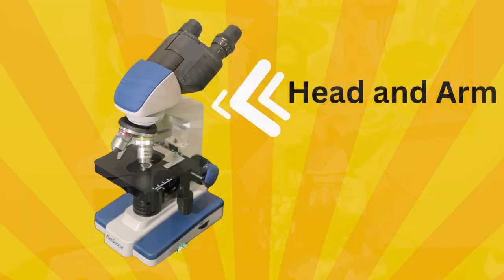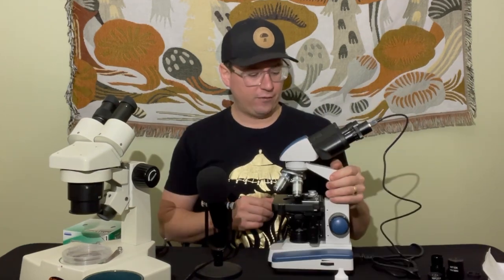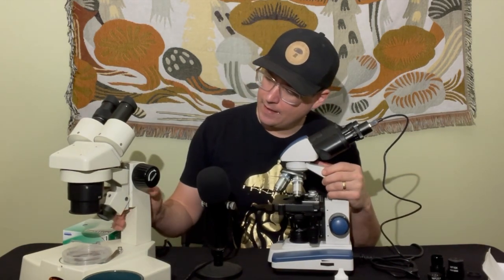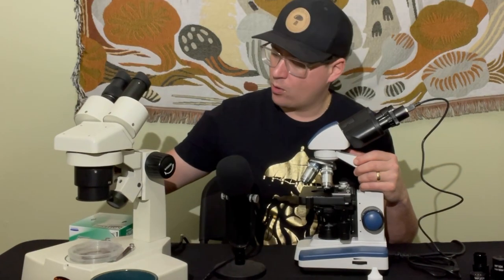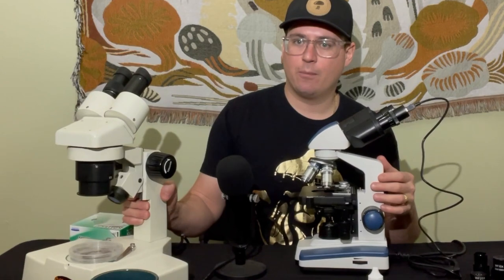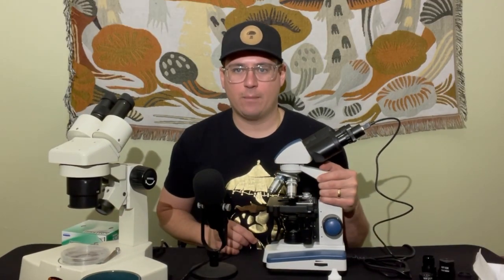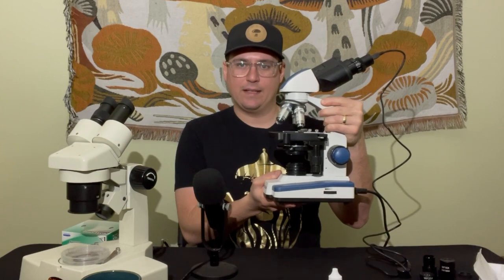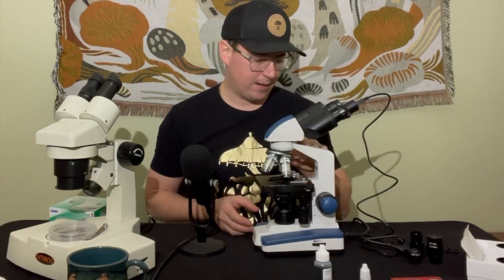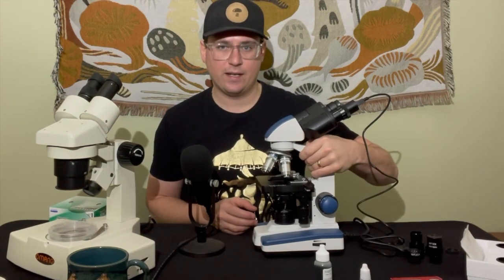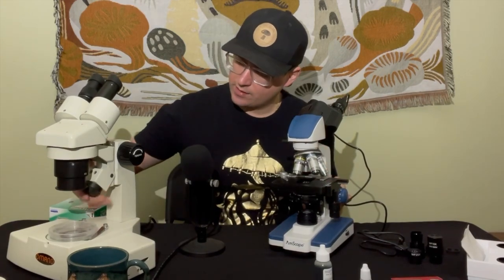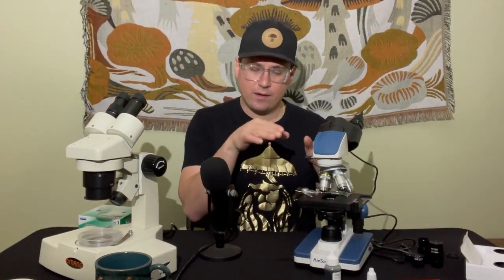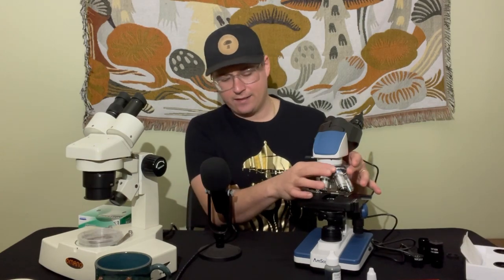Moving down, we have the head and arm. These are really important features. I like the AmScopes because they have really solid arms. One thing to note is that the coarse adjustment on this scope is located right in the middle of the arm where you'd hold it. When transporting a microscope, always hold it with one hand on the arm and the other at the base for a solid grip.